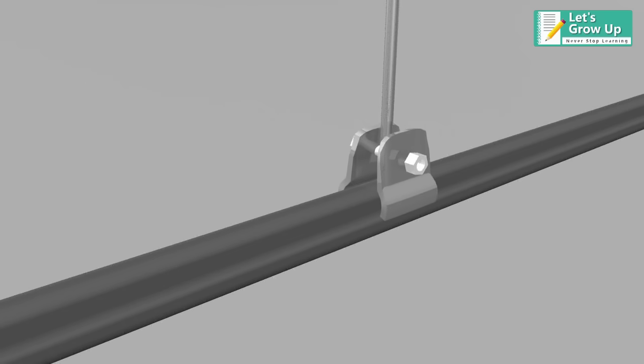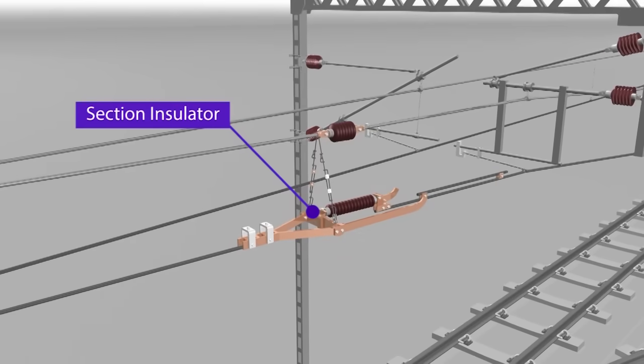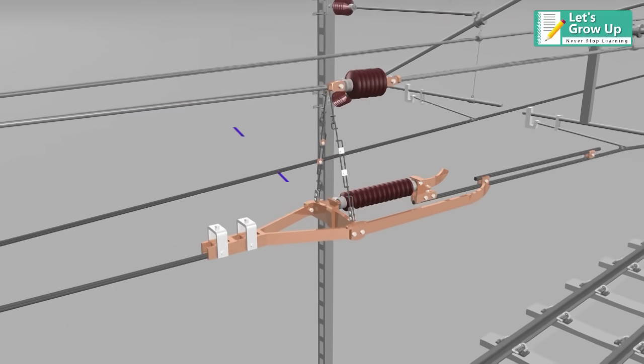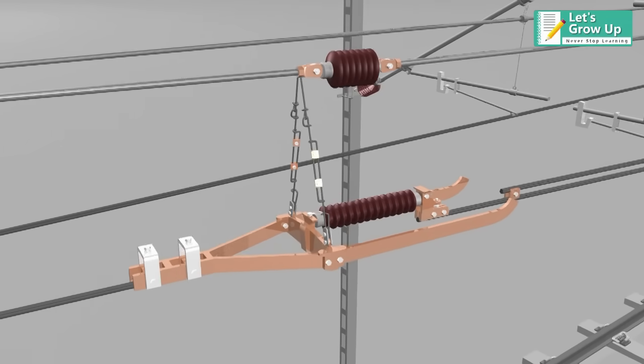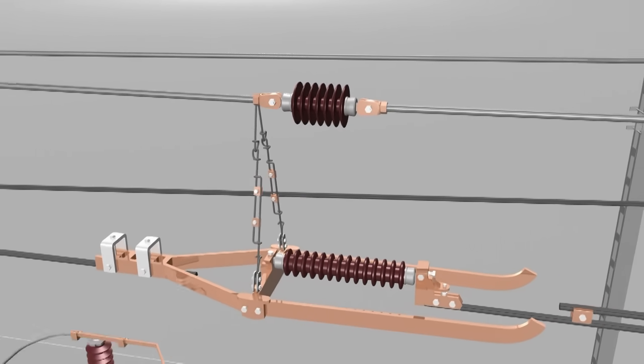Section insulator is a part of the catenary system which is installed along with the contact wire for separation of two electrical feeds, and the pantograph of the locomotive negotiates smoothly and maintains the current continuity.